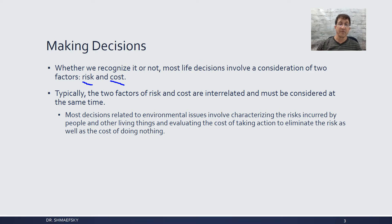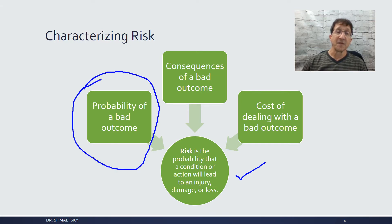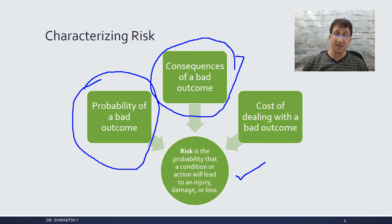When we look at characterizing risk, the first thing to determine is the probability of a bad outcome—what is the likelihood that I'm going to encounter a bad outcome? There are various ways we can determine this. Next is: what are the consequences of a bad outcome? Because 'bad' is relative. In environmental health, a consequence could be something that takes a long time to harm us—it might take two years off our lives—versus something that causes acute or immediate harm.